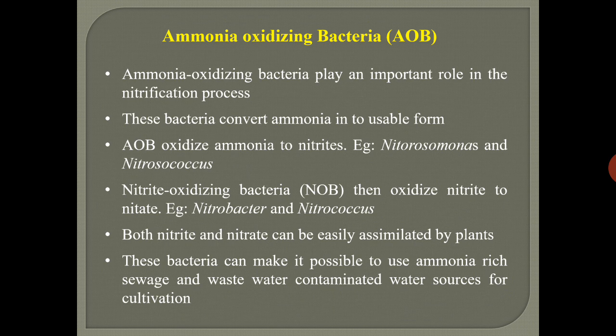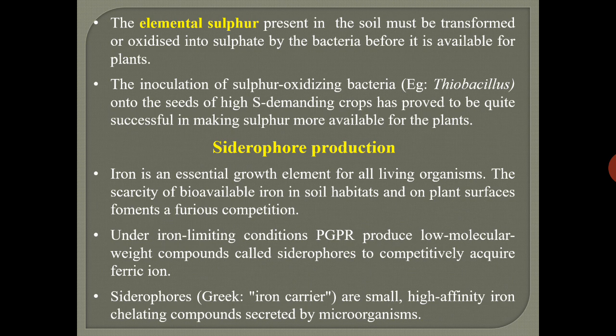Ammonia oxidizing bacteria, abbreviated as AOB — few PGPR are known to oxidize ammonia to nitrite. The bacteria involved include Nitrosomonas and Nitrosococcus. This nitrite is then further oxidized to nitrate by nitrite oxidizing bacteria like Nitrobacter and Nitrosococcus. Plants can assimilate both nitrite and nitrate. These bacteria can also support the growth of plants in wastewater or sewage-contaminated water sources rich in ammonia, which is the key importance of AOB.